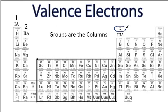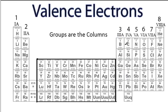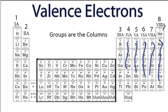In group 3, or 3A, 3 valence electrons. And we'll keep going: 4, 5, 6, 7, group 8, which has 8 valence electrons, except for helium, which only has 2 valence electrons, even though it's in group 8, or 8A.